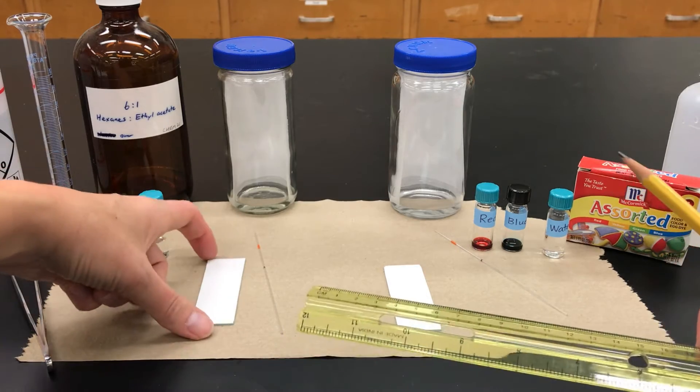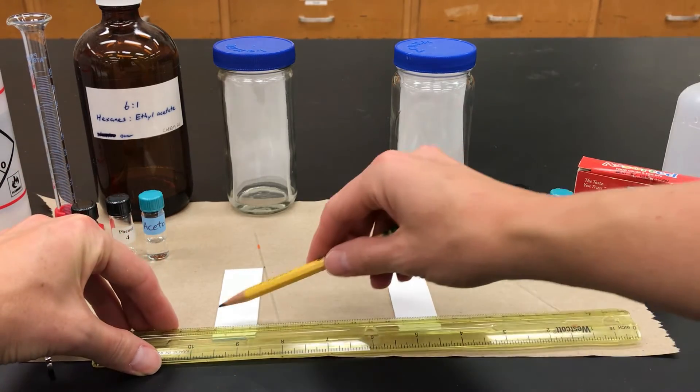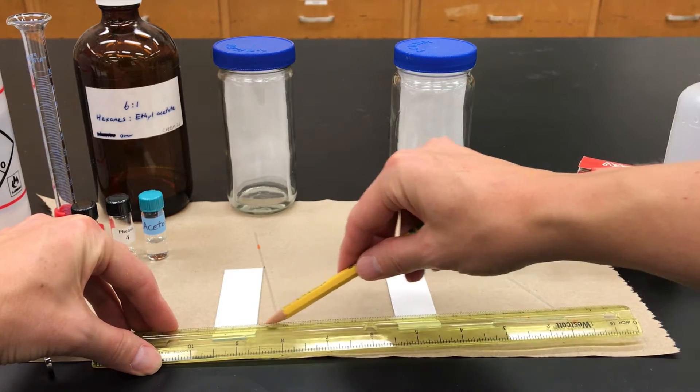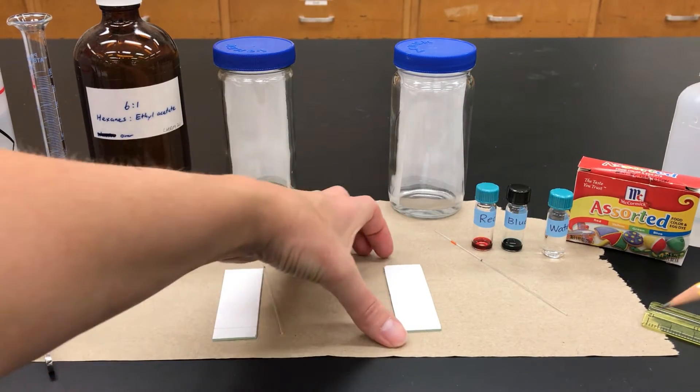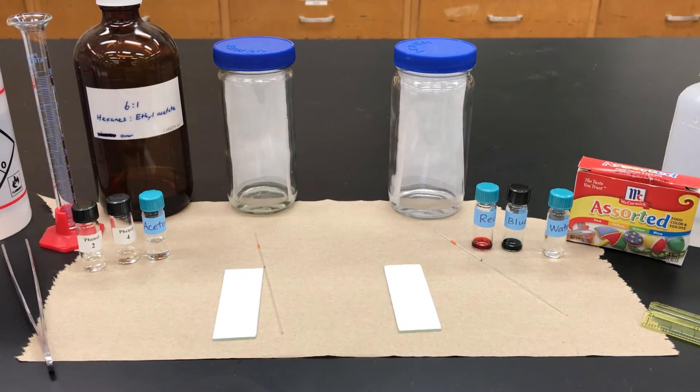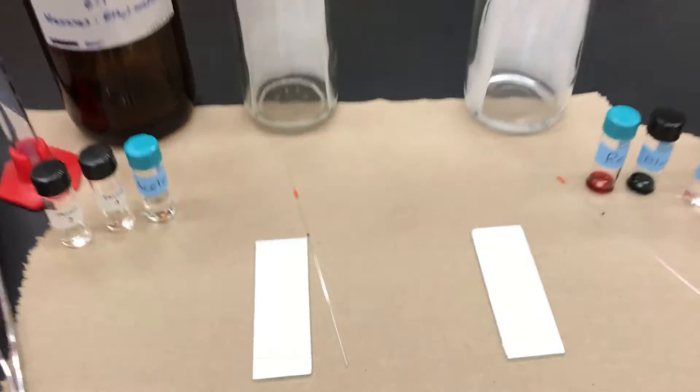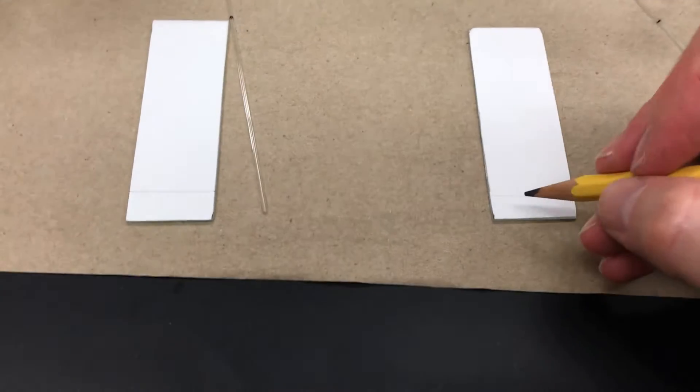What I'm now doing is using a ruler and marking a line roughly a centimeter or so from the bottom. I'm doing this very lightly. You don't want to gouge the silica, don't make a pit. You're just really lightly with the ruler drawing a faint line.